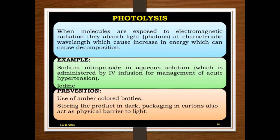How do we prevent photodegradation? We use amber-colored bottles, which block UV radiation. We also store the product in the dark. Packaging in cartons also acts as a physical barrier to light.